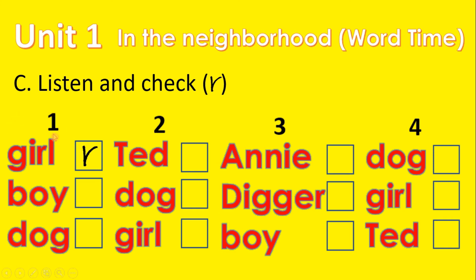Number one: Girl. Girl. Number two: Dog. Dog. Number three: Annie. Annie. Number four: Ted. Ted. Yeah, let's continue.